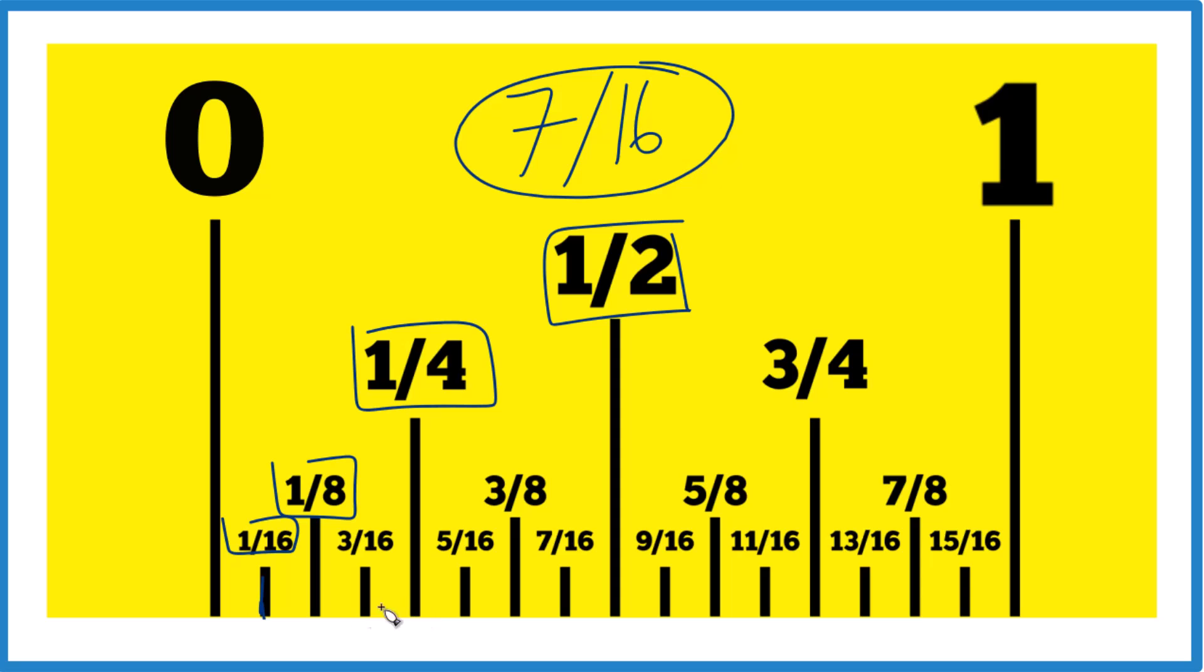So we're looking for 7 sixteenths. So 1, 2, 3, 4, there's 5 sixteenths, 6 sixteenths, and then right there. That's the 7 sixteenths.